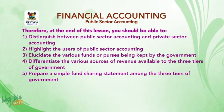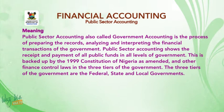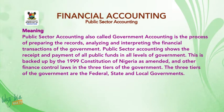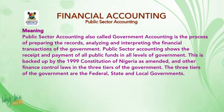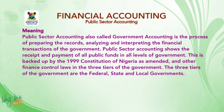Four, differentiate the various sources of revenue available to the three tiers of government. Five, prepare a simple fund sharing statement among the three tiers of government. Public sector accounting, also called government accounting, is the process of preparing, recording, analyzing, and interpreting the financial transactions of the government. Public sector accounting shows the receipt and payment of all public funds in all levels of government. This is backed up by the 1999 Constitution of Nigeria as amended, and other finance control laws. The three tiers of government are the federal, state, and local governments.